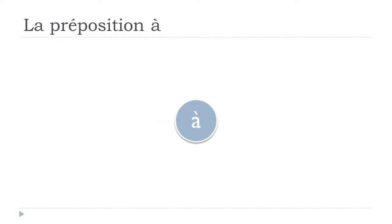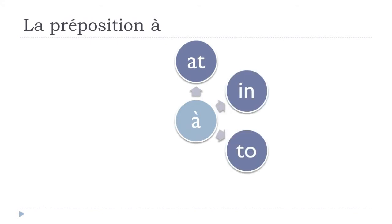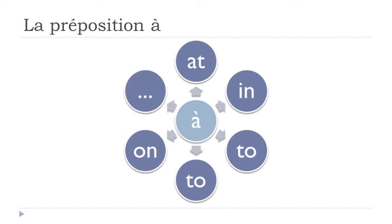À can mean or can be translated in English as 'at', 'in', 'to' — and I'll explain the reason why we have this second 'to', because it will be used in the 'from something to something' concept. It can also be translated as 'on', and there are other meanings and uses of this preposition À.